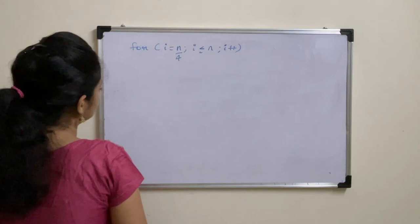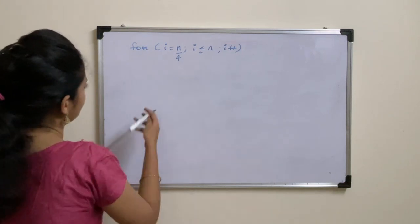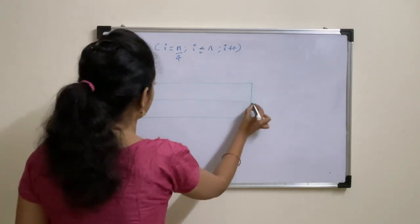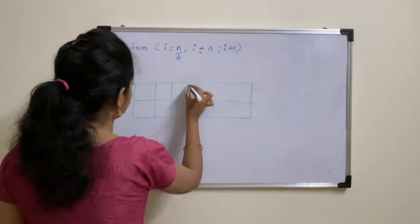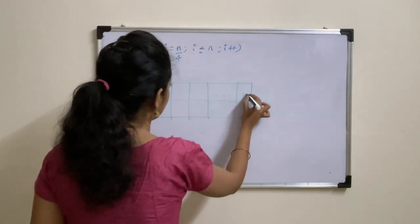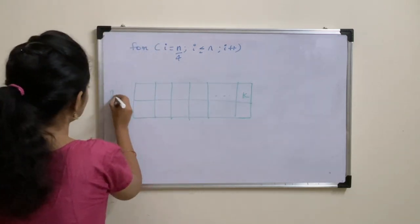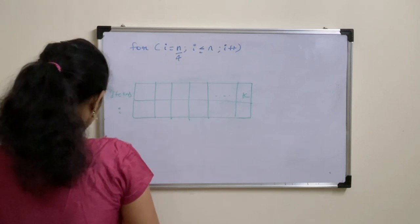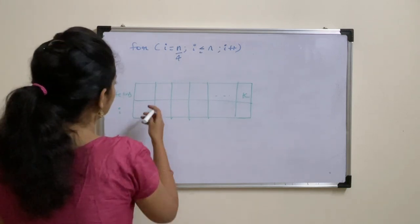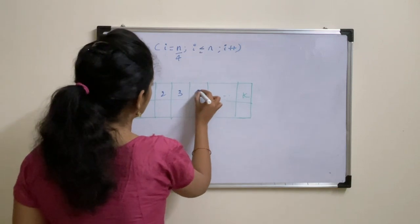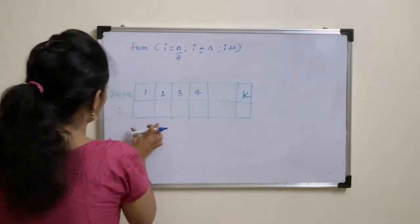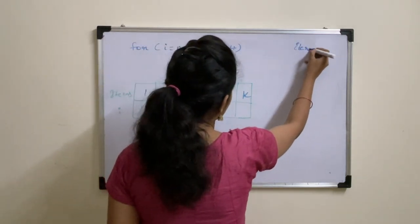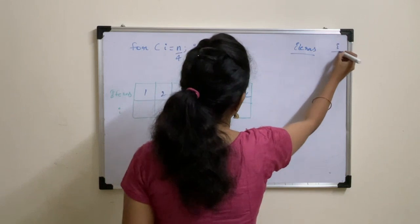So for this, this is nothing but iterations. So how many iterations will be? 1, 2, 3, 4 and so on, K. And here we need to insert i values. So let us take iterations and i values.